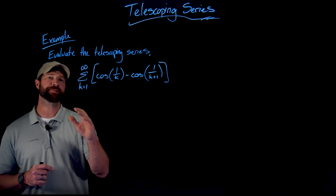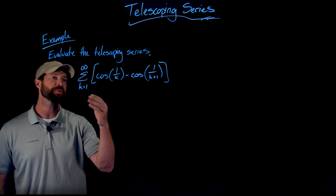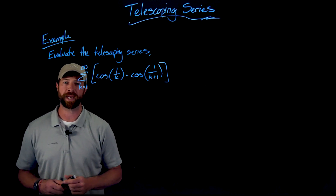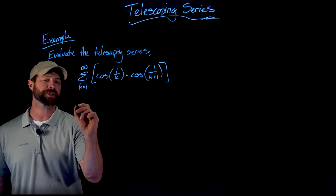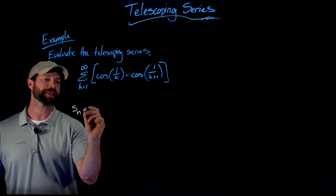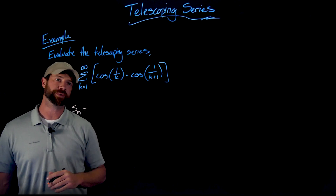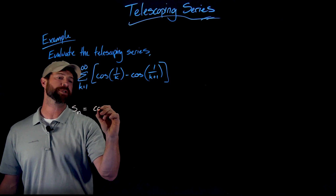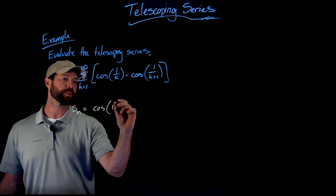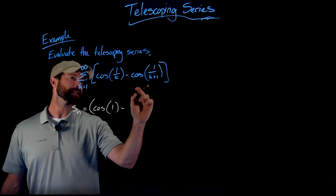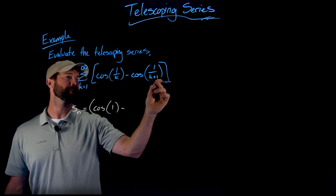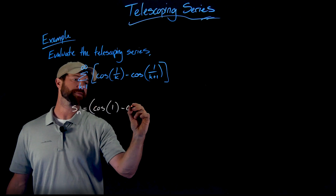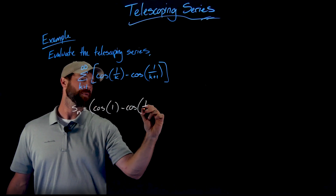Here we have the sum from one to infinity of the cosine of one over k minus cosine of one over k plus one. Let's develop and look at what the general nth partial sum would be. Starting with k equals one, this would be the cosine of one over one, which is just one, minus the cosine of one over k plus one. If k is one, this would be one over two, or one half, so this is the cosine of one half.